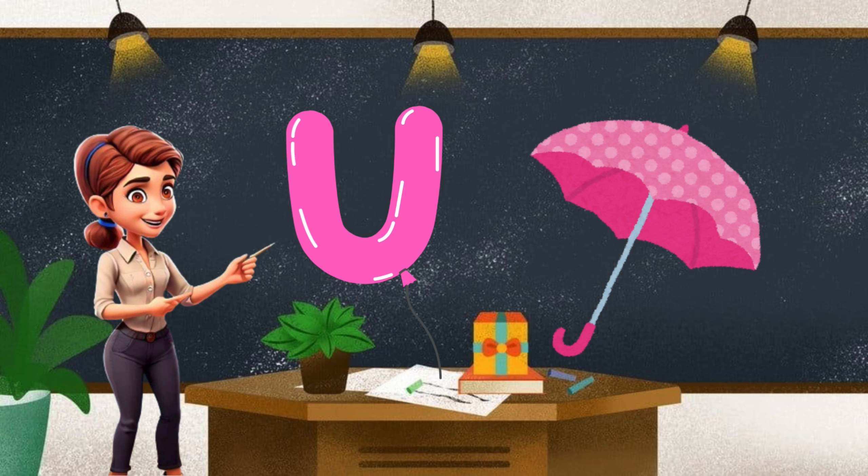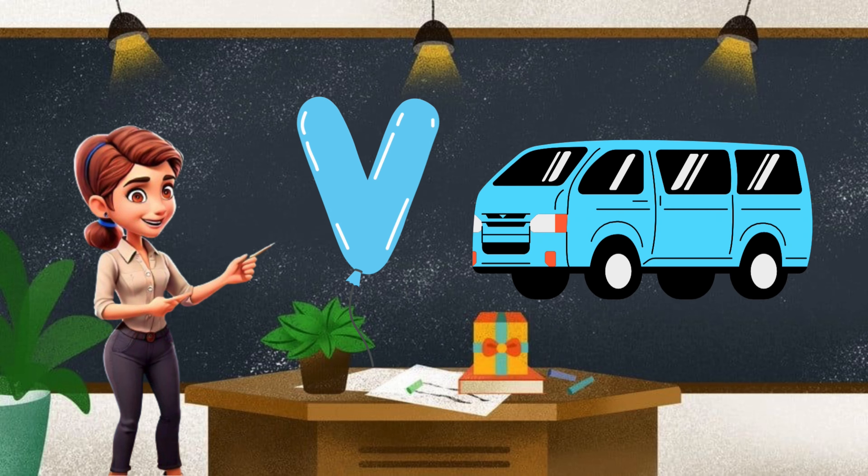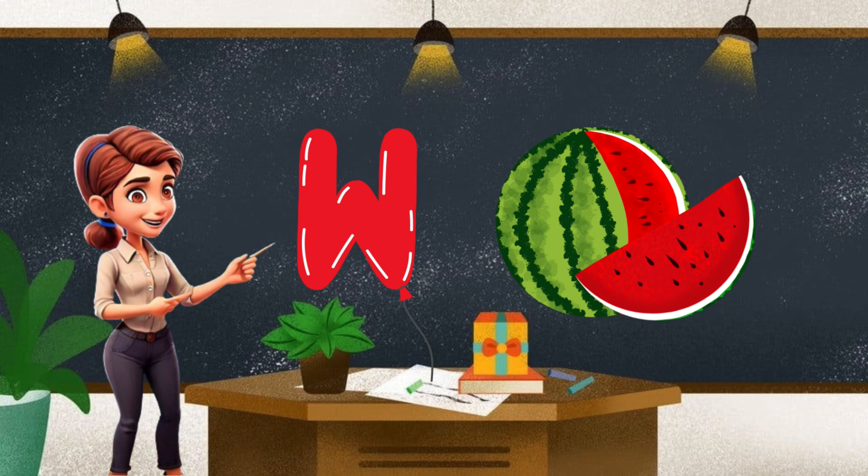U. U for umbrella, pink. What is your favorite color? V. V for van and it's blue. W. W for watermelon, green outside, red inside.